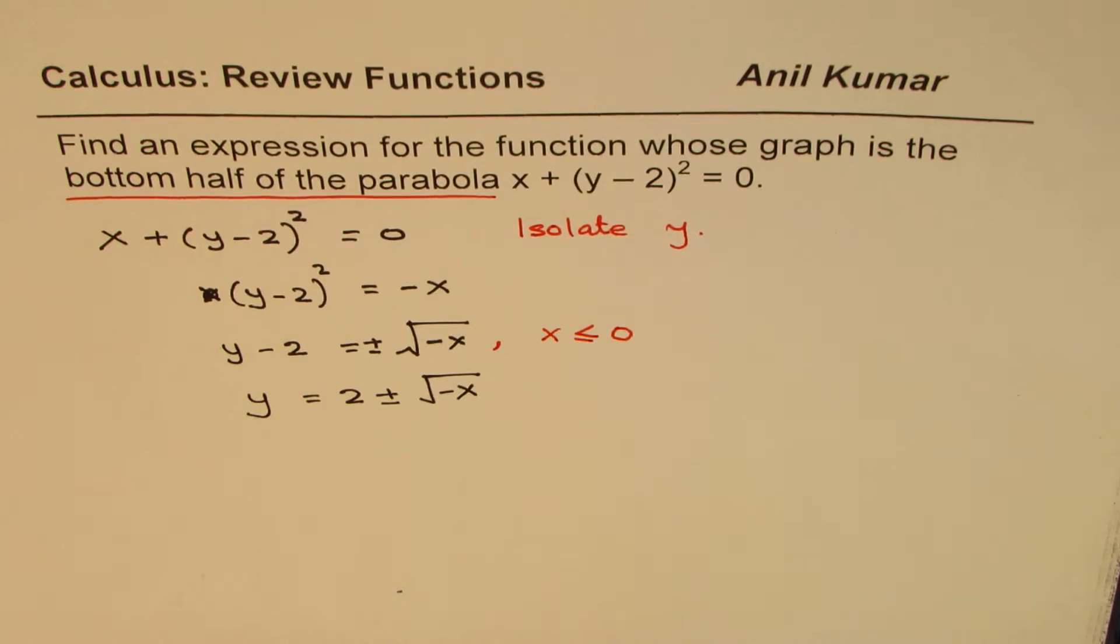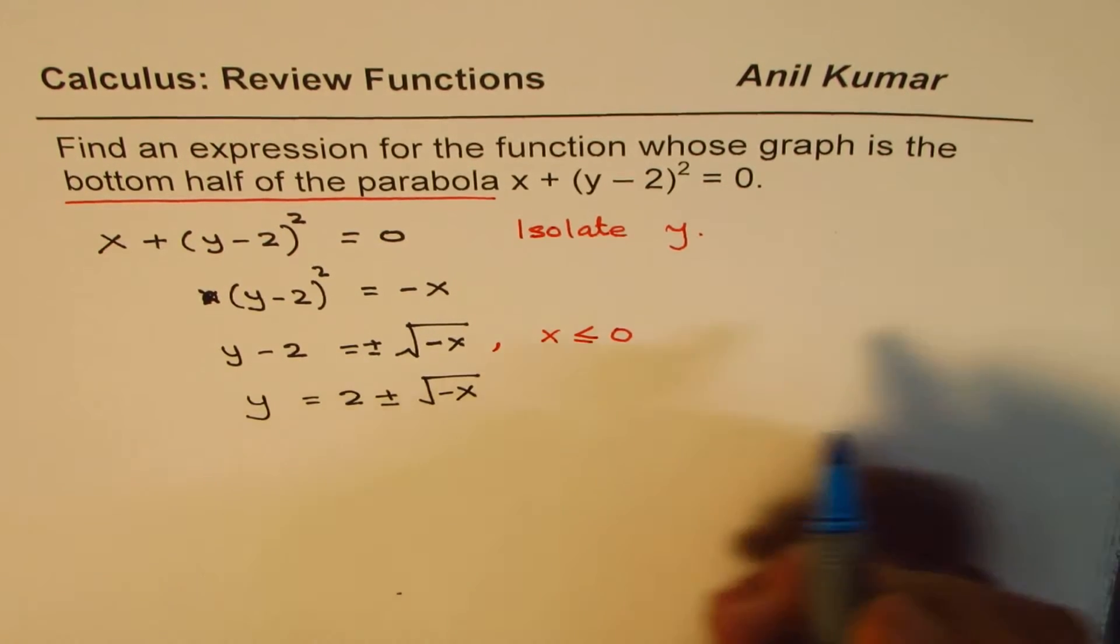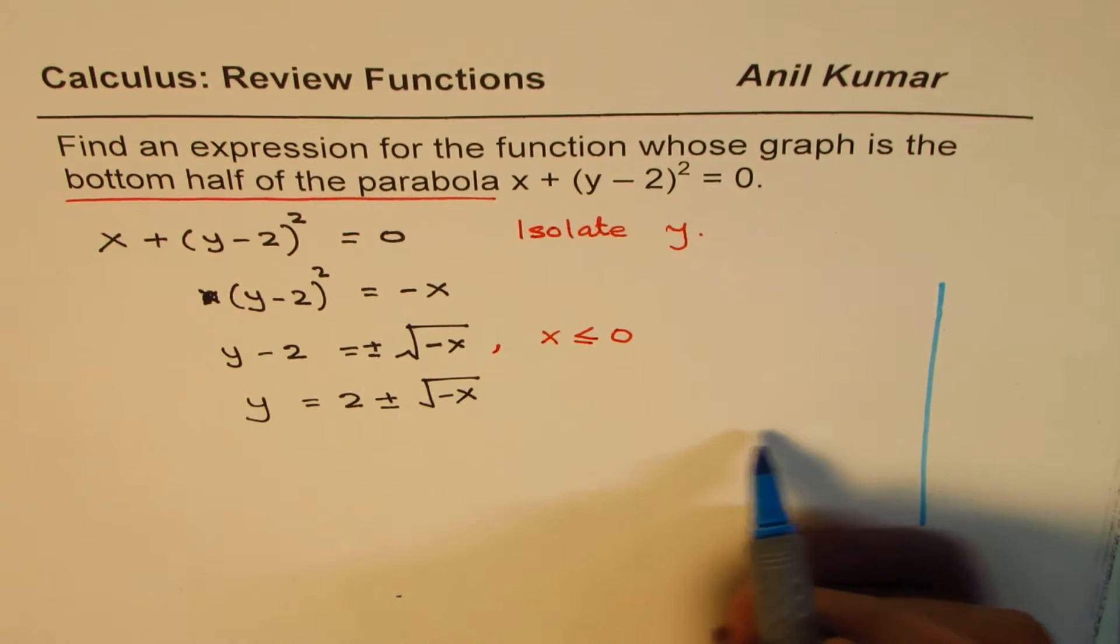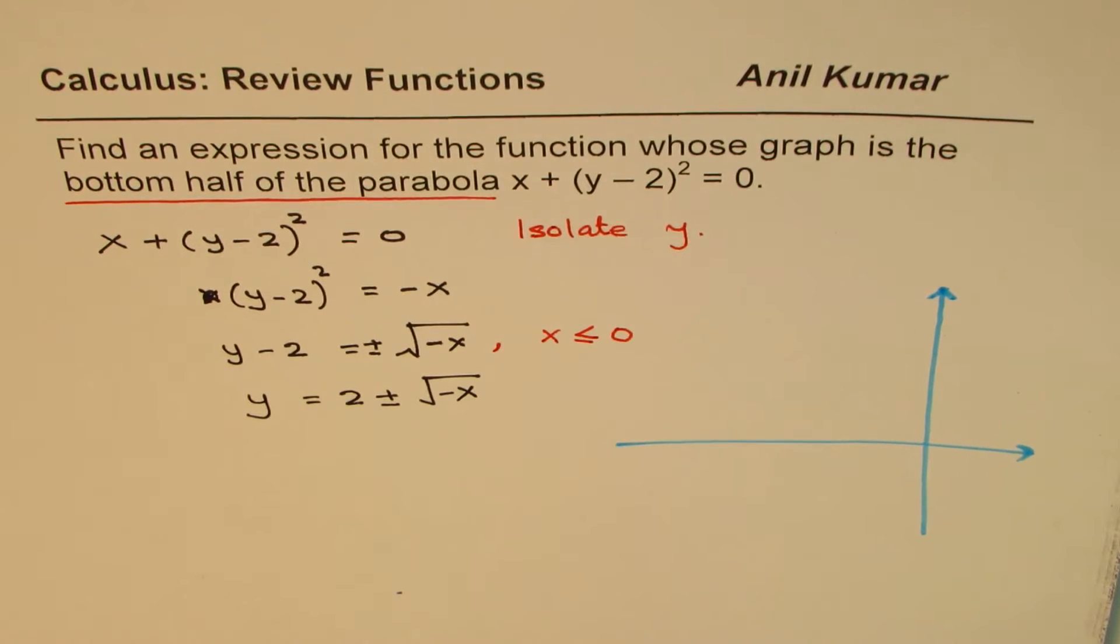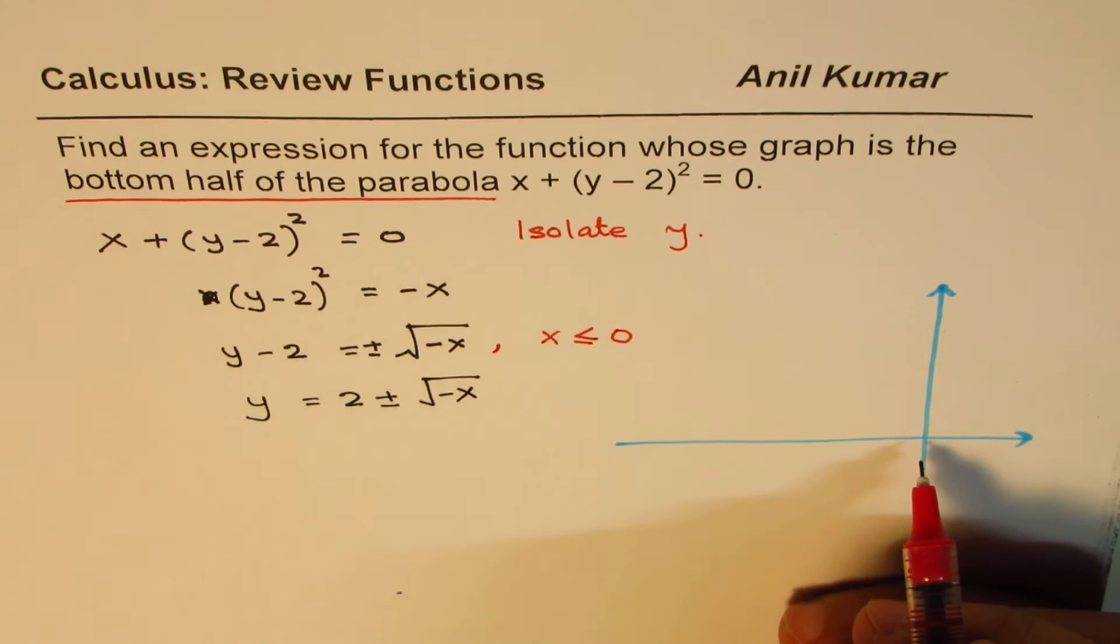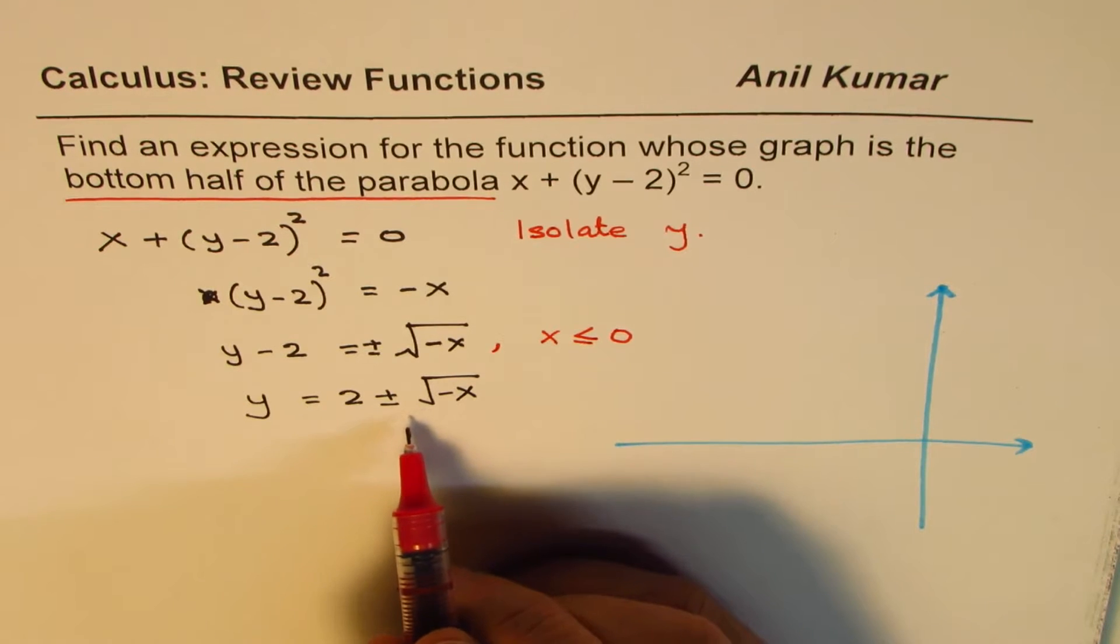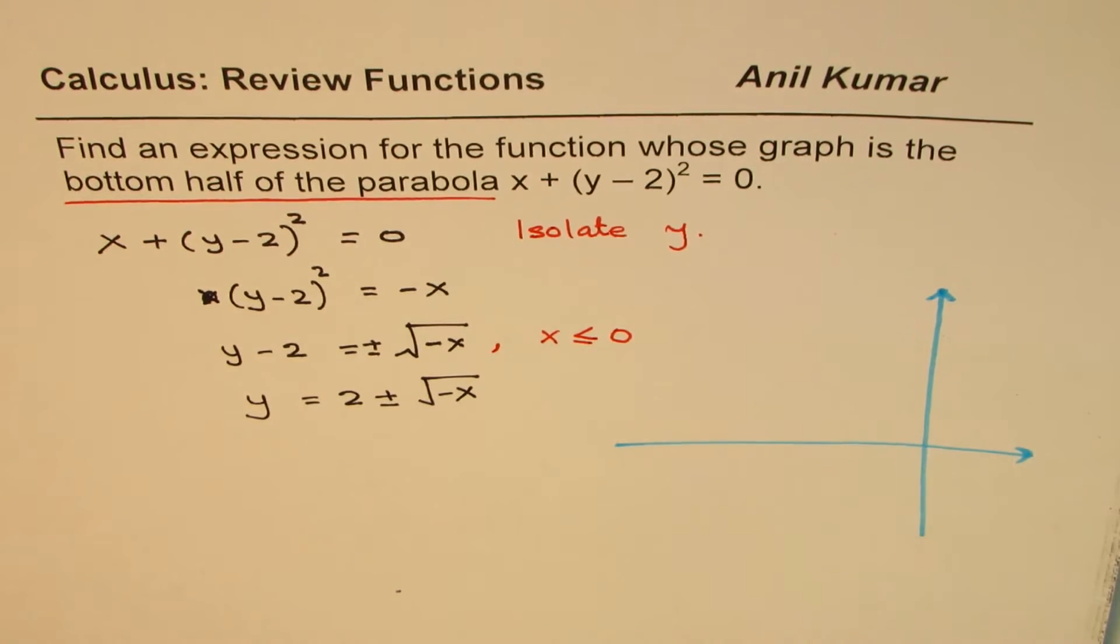So let's look at the graph. Since x is less than 0, let me take this edge, this part of the graph. Now remember, a function can be represented in four different ways. For example, here we have an equation we are representing in the form of a graph. You can write some data to represent or in words you can explain what the function is.